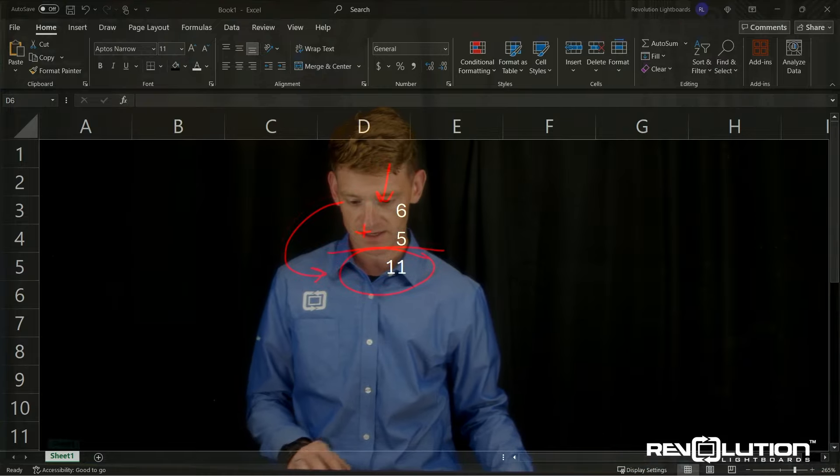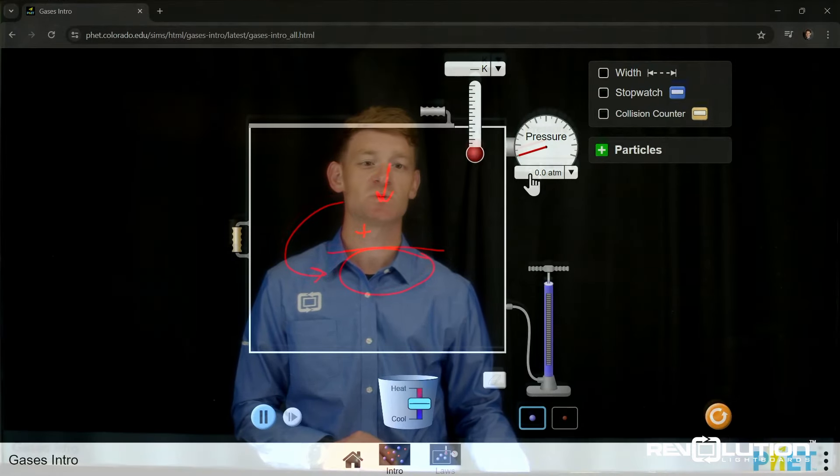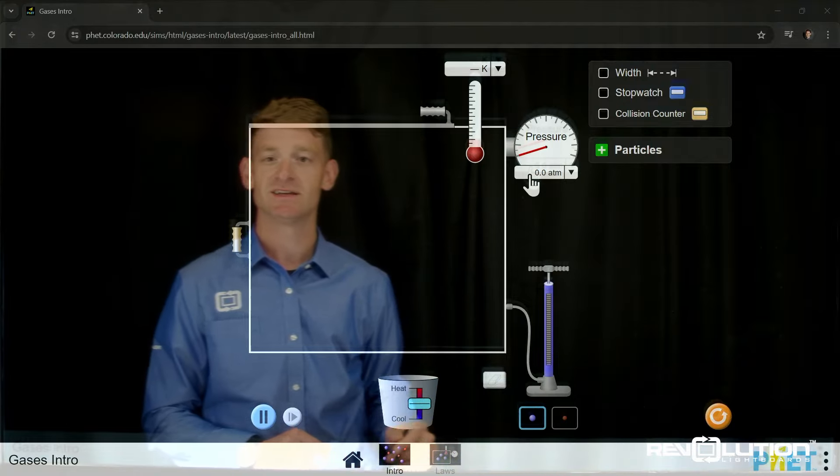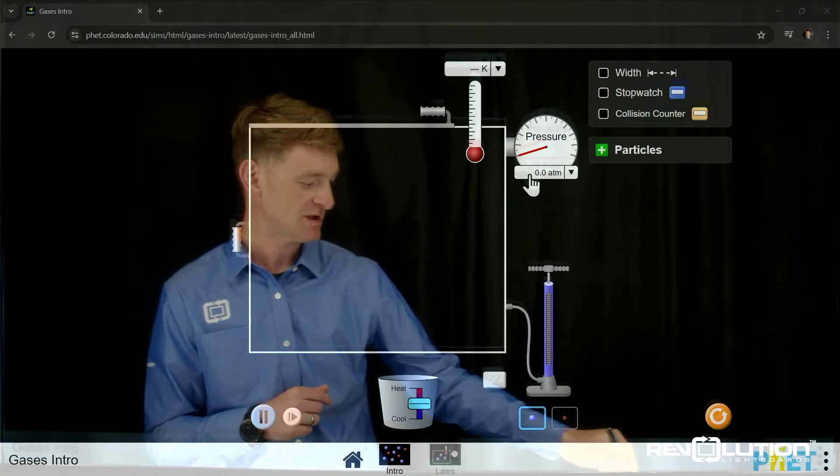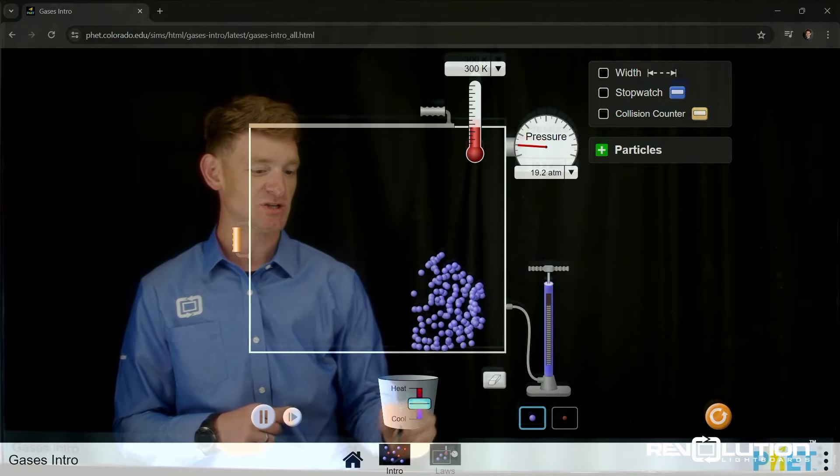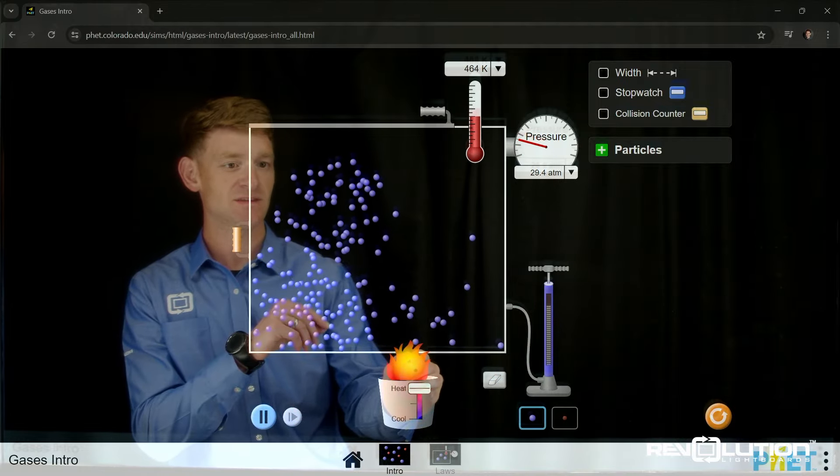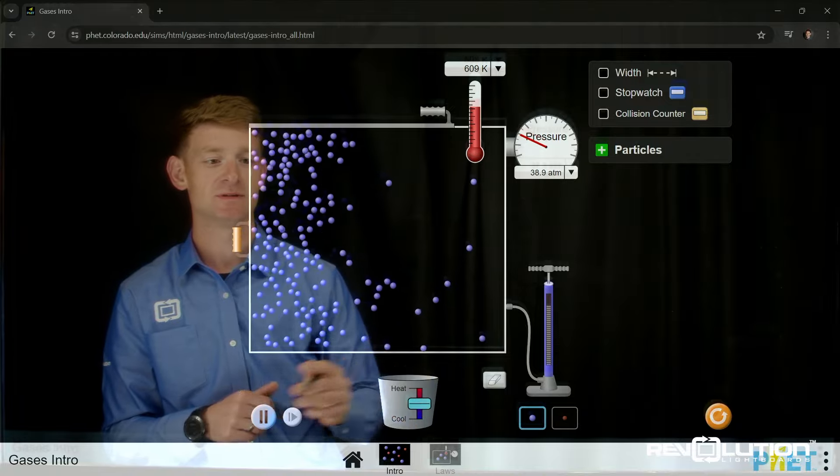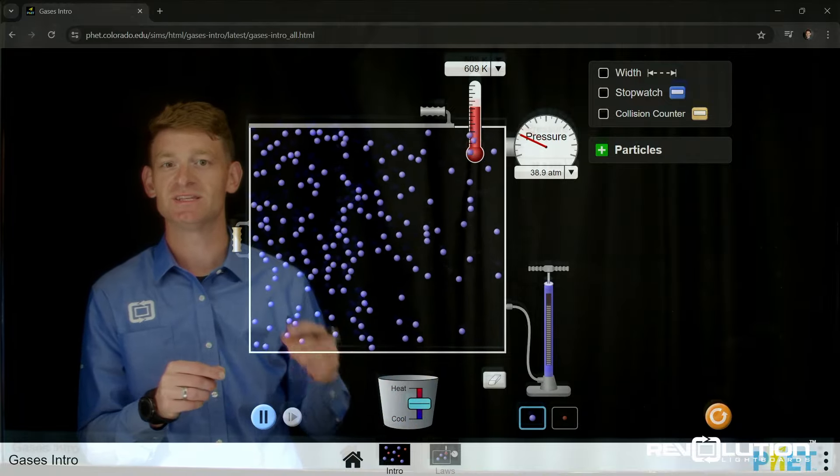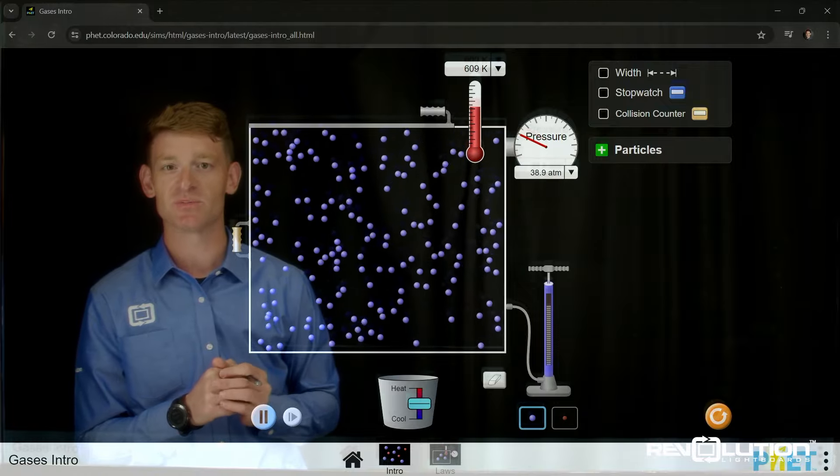Lastly, we've got a PHET simulation that we would say is one of our favorites here at Revolution. Let's talk about gases and how they interact with a space. We've got a number of different parameters to change here to see how the elements, how they respond. All this can be done with the DScribe from Revolution, utilizing our plug and play, drag and drop overlay system.